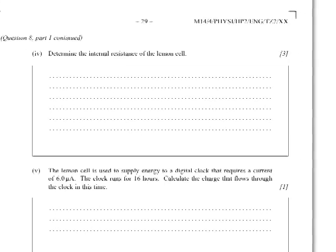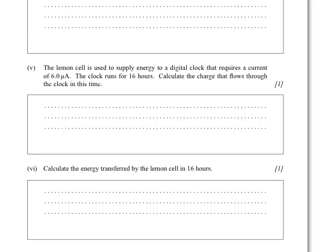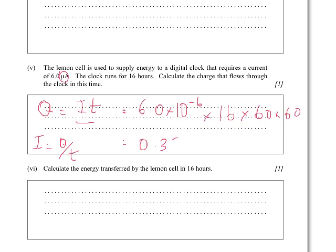So this next question, determine the internal resistance, we've done. And let's go on to some simple calculations. The lemon cell is used to supply energy to a digital clock that requires a current of 6 microamps. The clock runs for 16 hours. Calculate the charge that flows. So it's a very simple question. It's asking you to work out the charge, Q, which is equal to IT. You should remember, because current equals charge over time. So rearranging that, you get this equation. And the current is 6 times 10 to the minus 6, because it's microamps, times 16, but it's hours, and you need it in seconds. So times 60 times 60, which gives you 0.35 coulombs.